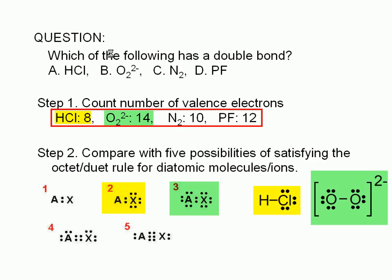We can see that only structure five has ten valence electrons. Therefore, we expect the nitrogen molecule to have this structure. There's a triple bond between the two nitrogen atoms and a lone pair on each one.